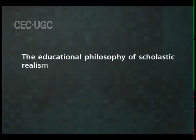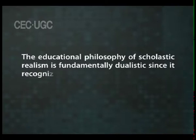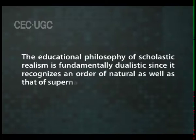Scholastic Realism. Scholastic philosophy is the western philosophy ascribed to Roman Catholics. This philosophy gave importance to the study of eternal truth over world objects. Scholastic realists were moderate realists who believed that there is a transcendent mind in which the universe exists. The educational philosophy of scholastic realism is fundamentally dualistic since it recognizes an order of natural as well as that of supernatural things. In scholastic realism, God is central and nature is his manifestation.